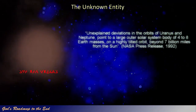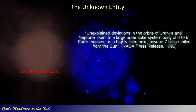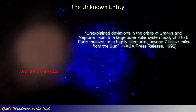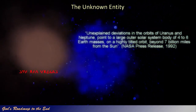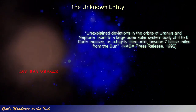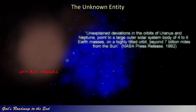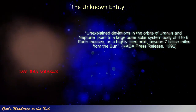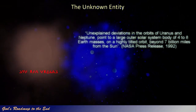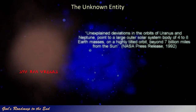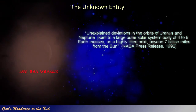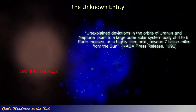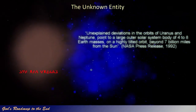In this release the writer stated the following: 'Unexplained deviations in the orbits of Uranus and Neptune point to a large outer solar system body of four to eight Earth masses, on a highly tilted orbit, beyond seven billion miles from the Sun.' This release provides a little more information with respect to the possible size and the orbit of this object. In addition, we notice that the distance between this object and the Sun at this point is estimated to be beyond seven billion miles away, indicating a definite decrease in distance over the nine years between the two press releases.